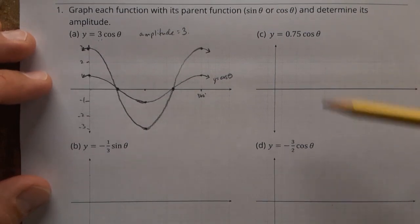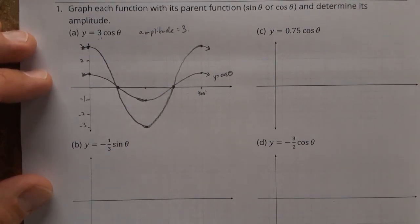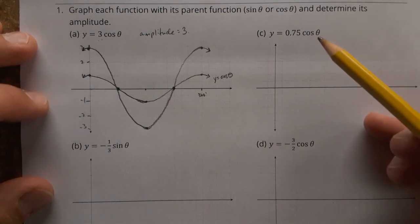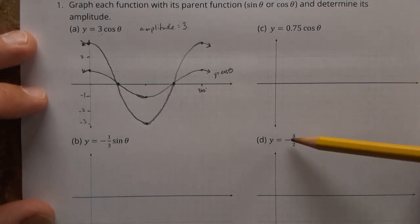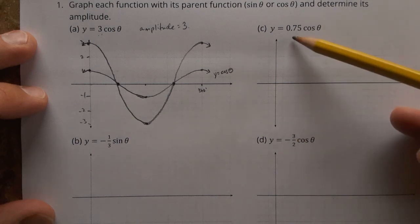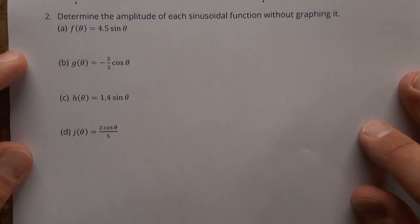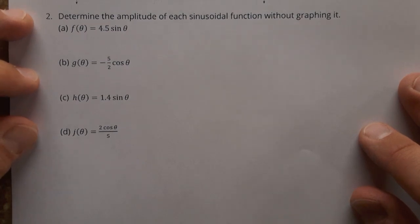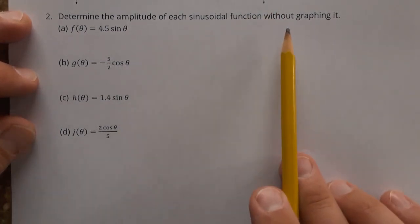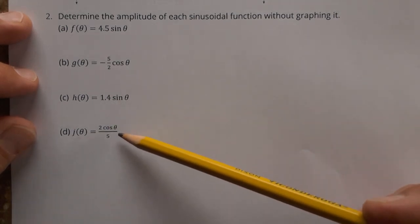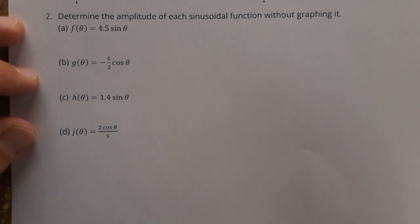Okay, I'm going to leave the rest of these to you to try. And if you have any questions, of course, you know how to ask me. I just want to point out that you want to be careful that sometimes you have a reflection, like this one right here, and sometimes you don't. Down at the bottom here, I've got four more questions for you to try. Determine the amplitude of each sinusoidal function, but don't graph it. Just look at the equation to figure out what it is. And I want you to be extra careful with the last one here. Okay, thanks very much.